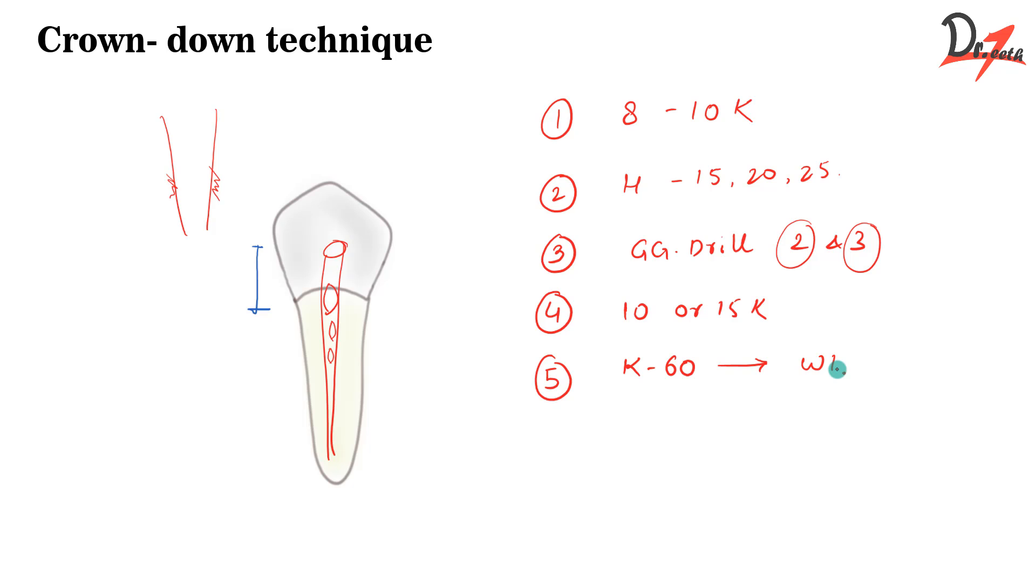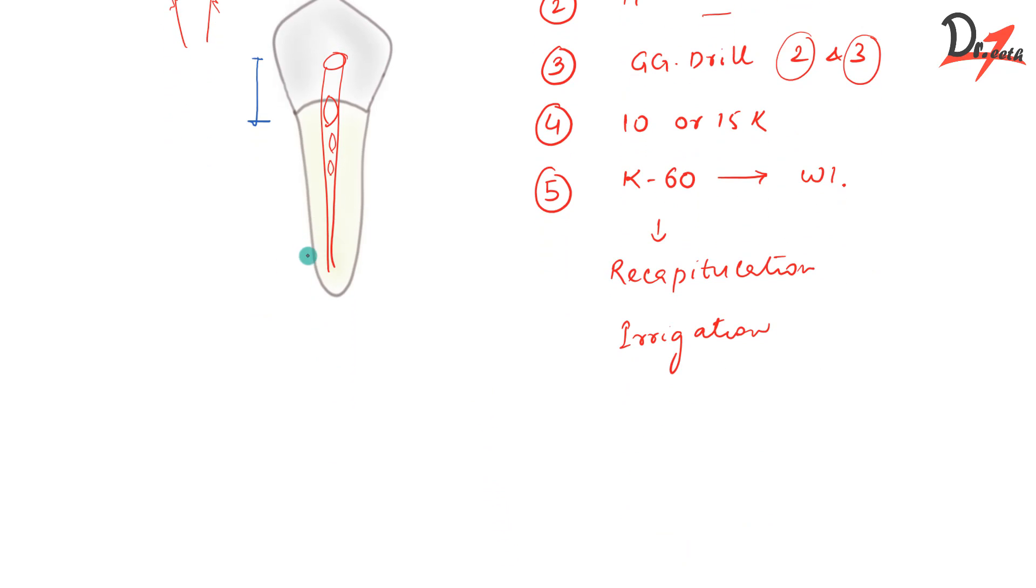And two important things have to be kept in mind like I told in the previous video, and that is we have to do in between all these steps two things: recapitulation and we have to do irrigation. So recapitulation is done with number 10 or 15 file in between each instrumentation so that there is no clogging of the canal, and irrigation is also very important so that we have that fluidity inside so that we can properly instrument the canal and it also helps in removal of the debris. Now we have to enlarge the most apical portion to a size that is appropriate for the tooth. This will vary from tooth to tooth depending on how the roots are. So the canal is enlarged up to that appropriate size.